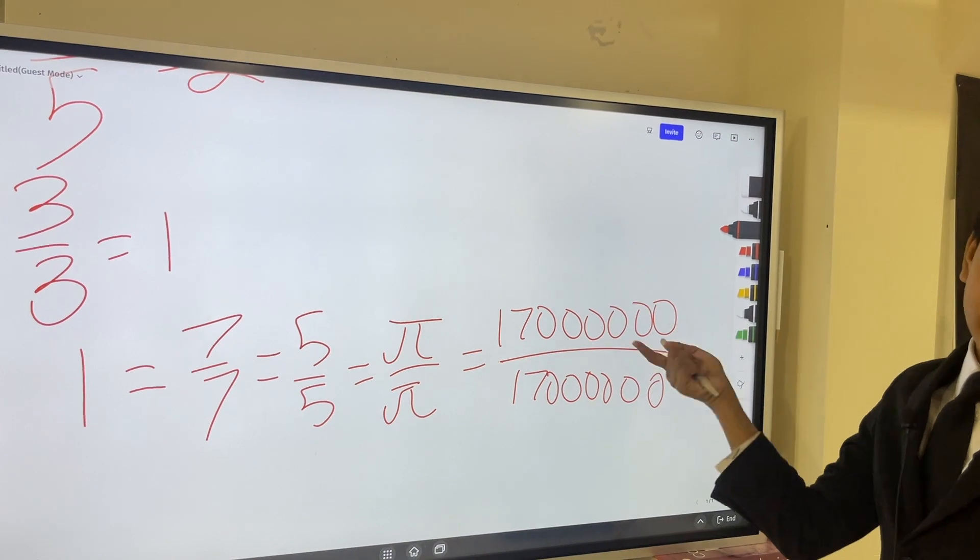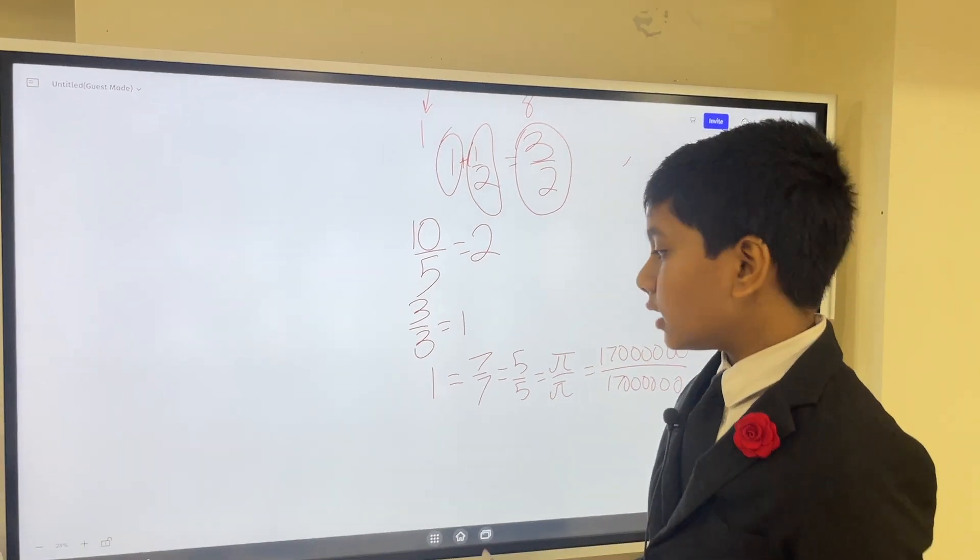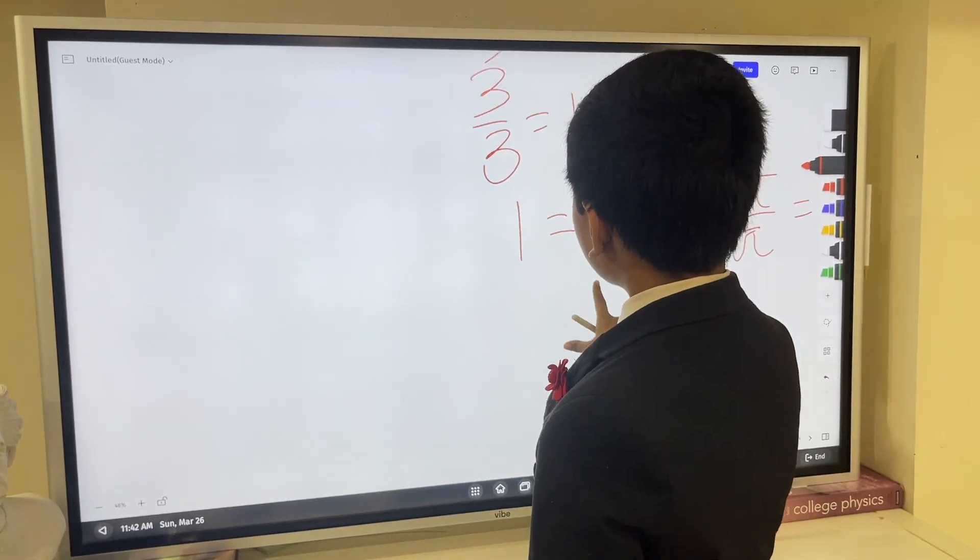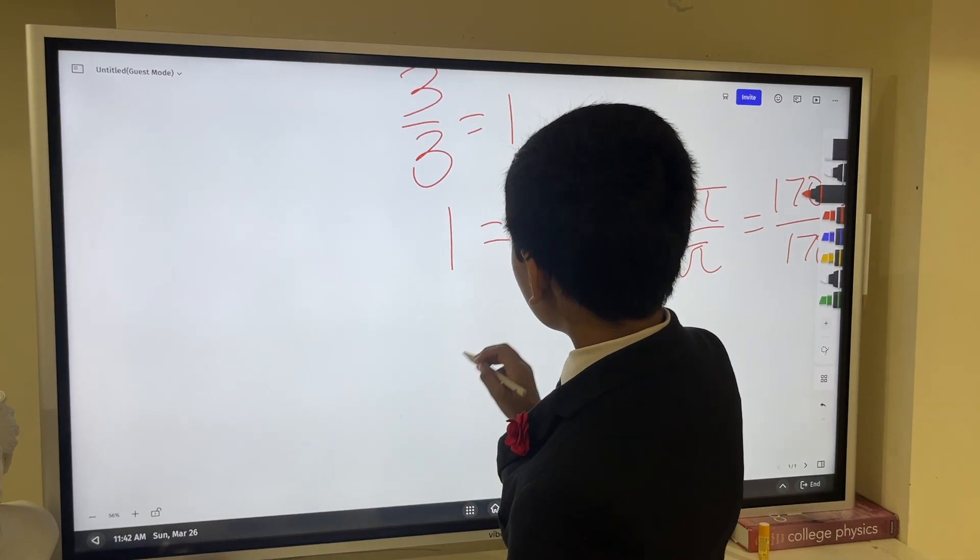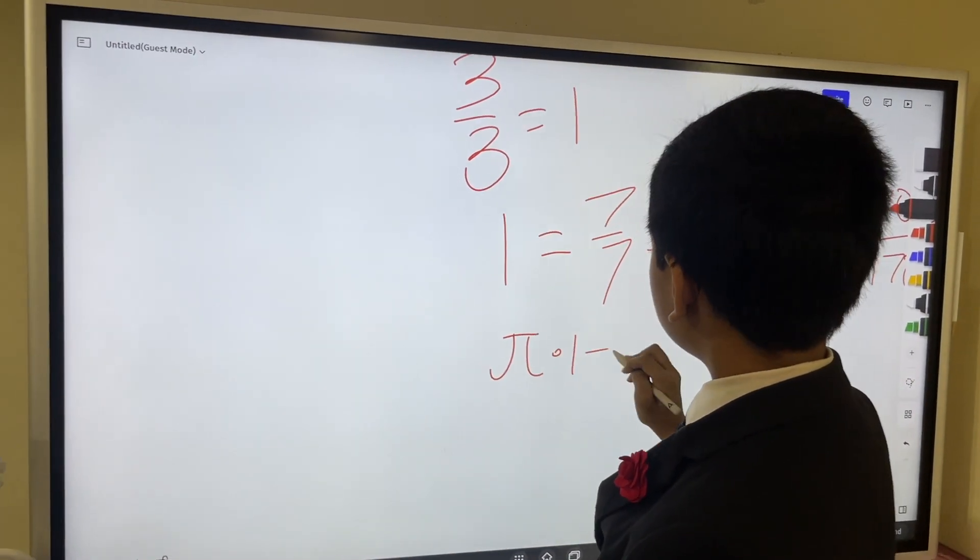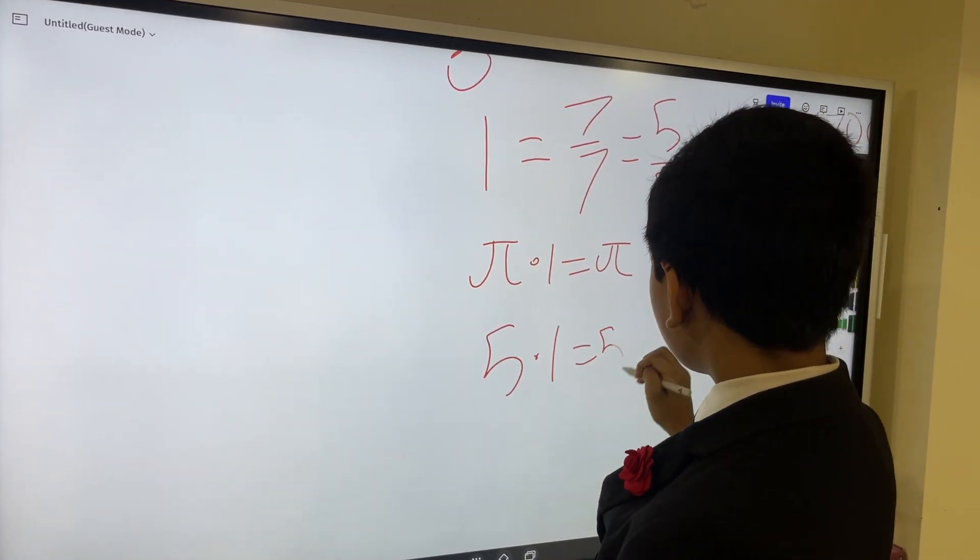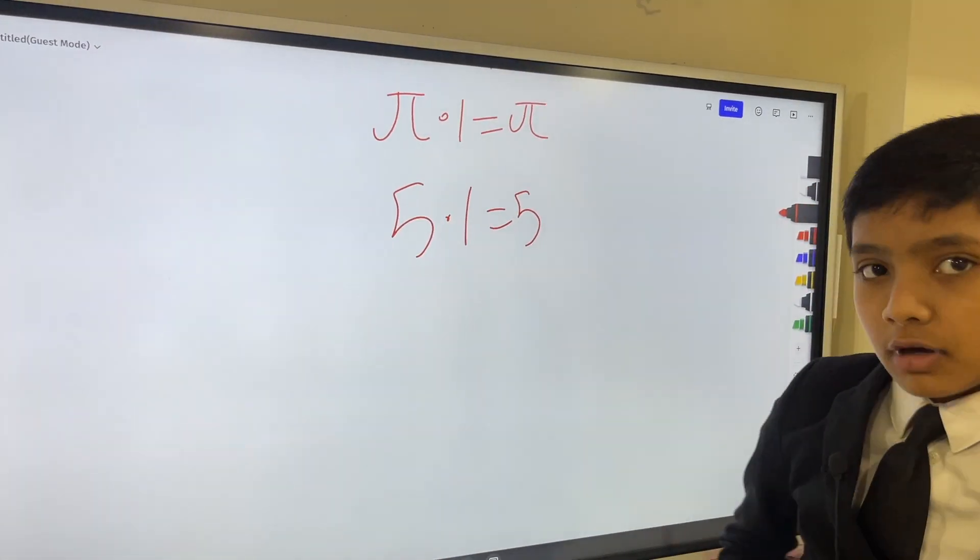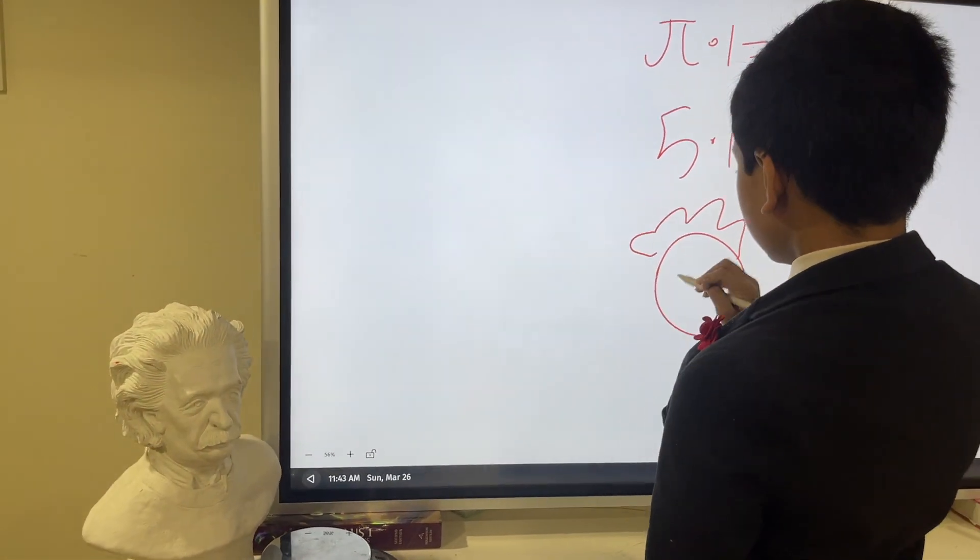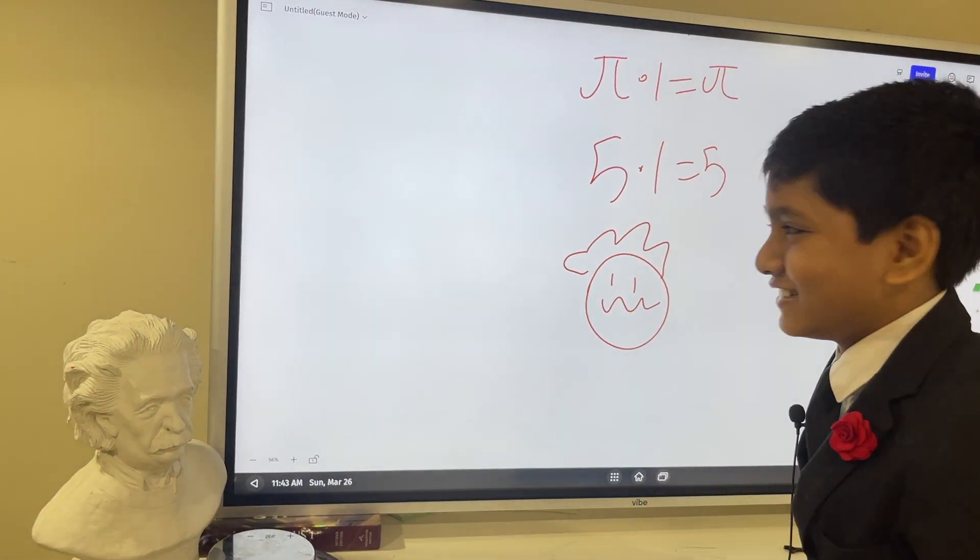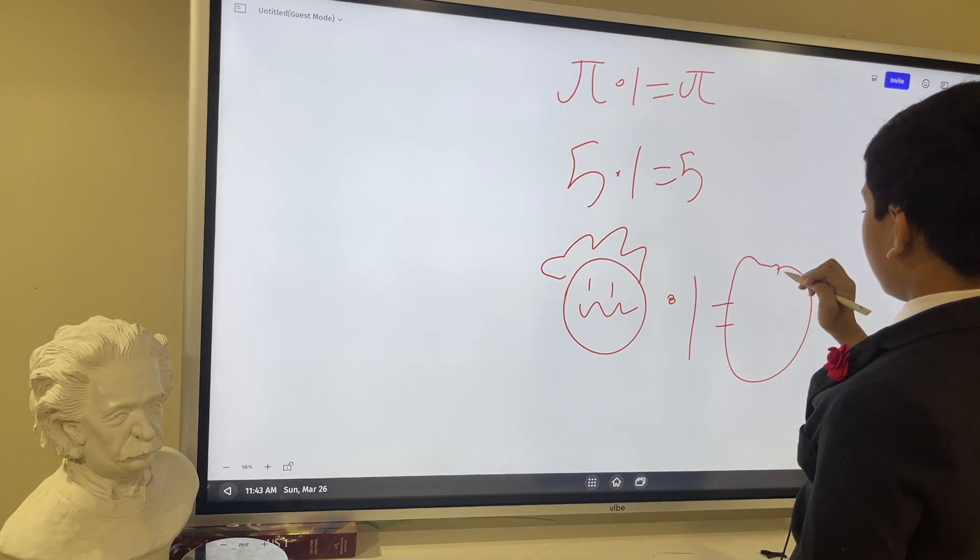1 is anything over itself. And this is super useful because remember that multiplying any number by 1 gives you itself. Pi times 1 is pi. 5 times 1 is 5. Einstein times 1 is equal to Einstein.